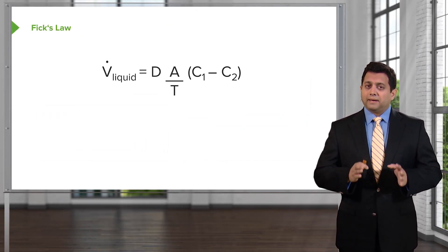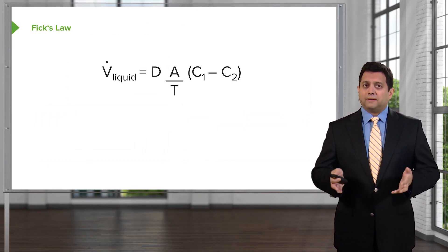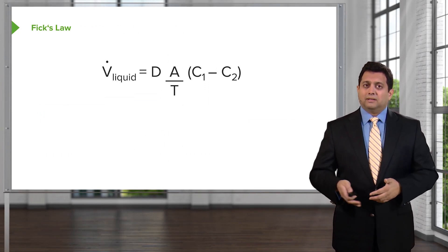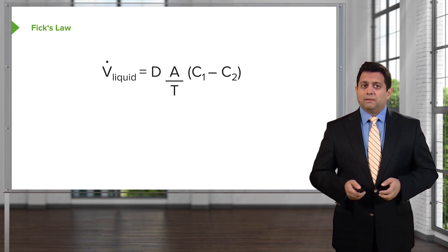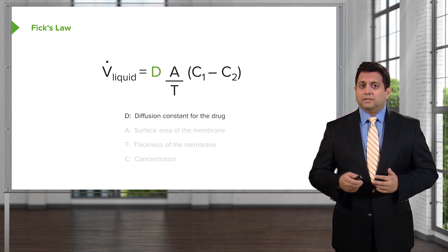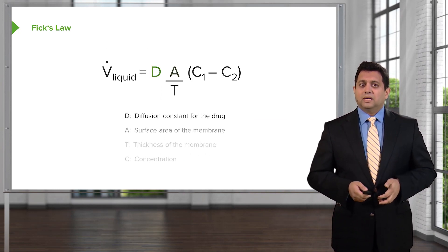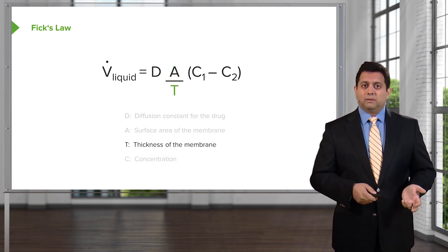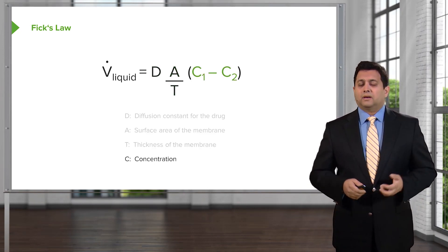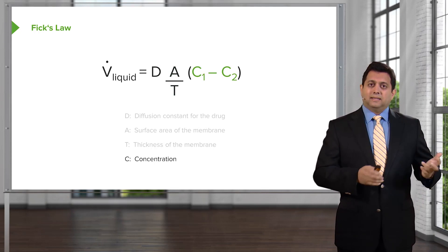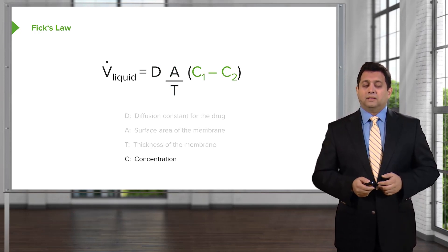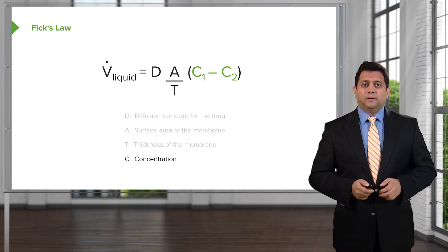All passive processes are governed by Fick's law. It is proportional to the diffusion constant of the drug, the surface area of the membrane, the thickness of the membrane, and the concentration difference — say, between the inside and the outside of the cell, with the outside usually being C1.